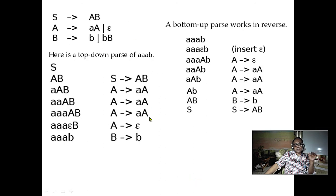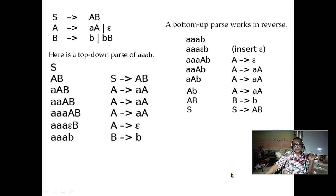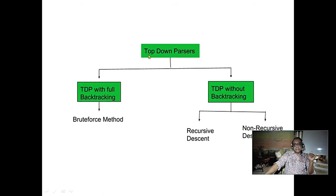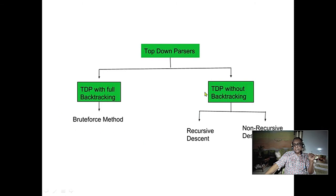Comparing the two approaches: top-down parsing with full backtracking is not linear and is not affordable for programming languages. Top-down parsing can be recursive descent (with backtracking) or non-recursive descent. Non-recursive descent — our target — is LL(1), which guarantees linear parsing without backtracking.